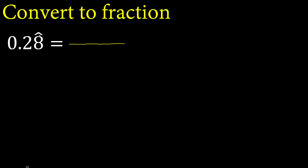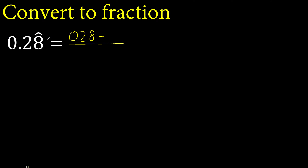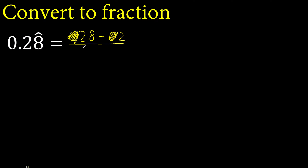First, the number without point or symbol — like 028 minus the number outside the symbol without point, 02. Eliminate 0 on this side. After the point, there is one number under the symbol, therefore 9 always 9, one number one time.